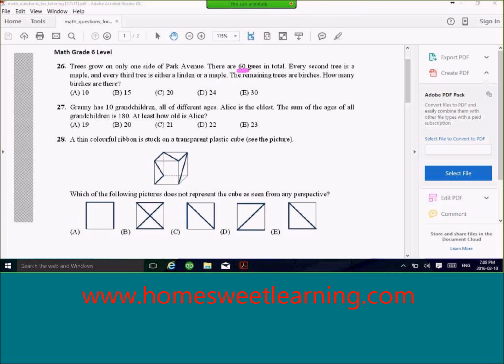There are altogether 60 trees, and every second tree will be maple, and every third tree will be linden or maple, and the remaining trees will be birches.